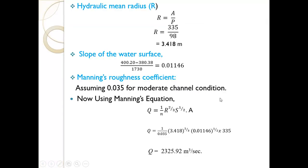First, we calculate the hydraulic mean radius R = A / P. With A = 335 square meters and P = 98 meters, we get R = 335 / 98 = 3.418 meters.